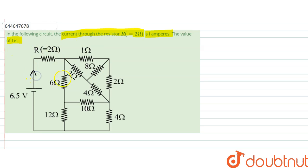So the current passing through this overall circuit is I, which is what the current passing through this resistor is given. We have to find that.